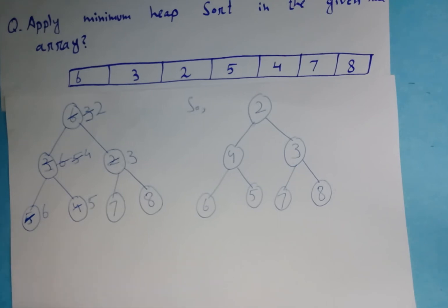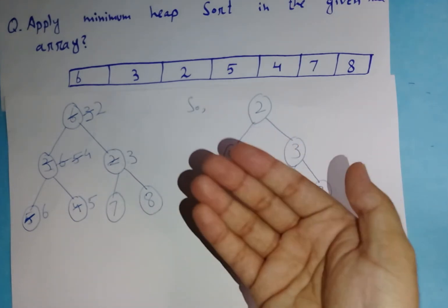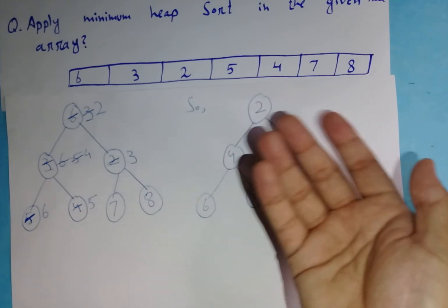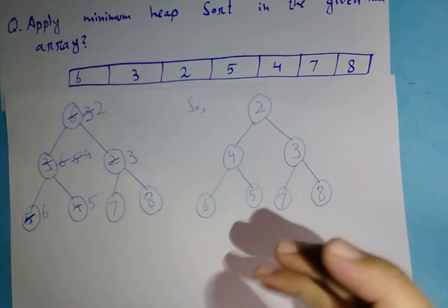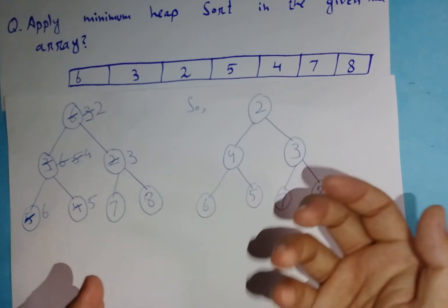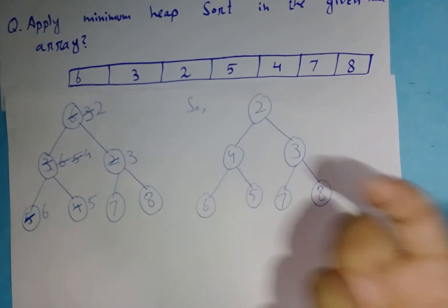I hope you understood how you can apply minimum heap sort in any array. If any array comes in your exam and you have to apply minimum heap sort, you just need to remember one condition: the child node value should be greater than the value of the parent node. Just remember that one condition and you can easily apply minimum heap sort in any array.